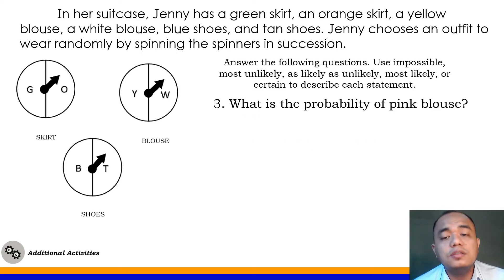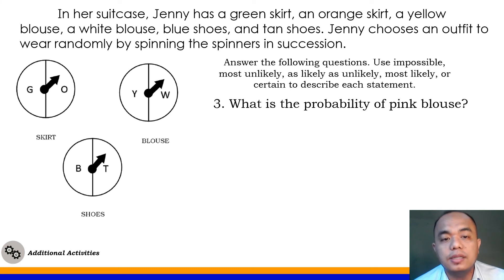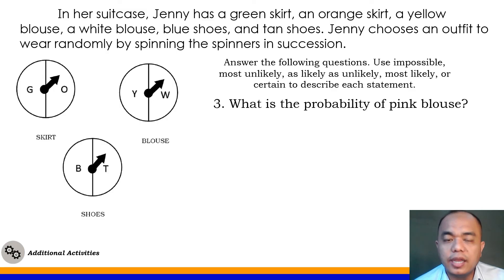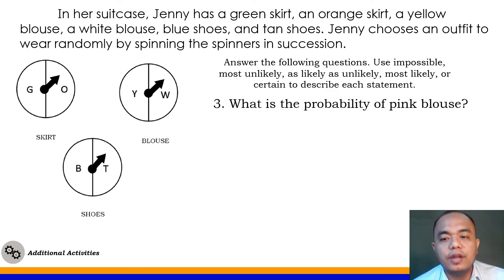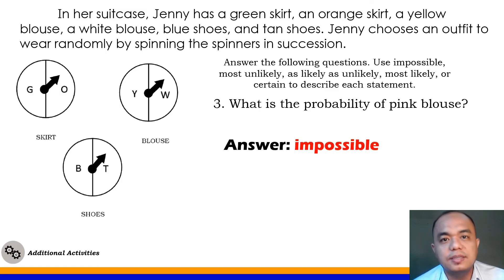Number 3: What is the probability of wearing a pink blouse? Jenny's blouses are only yellow and white — there is no pink blouse. So the correct answer for number 3 is impossible.